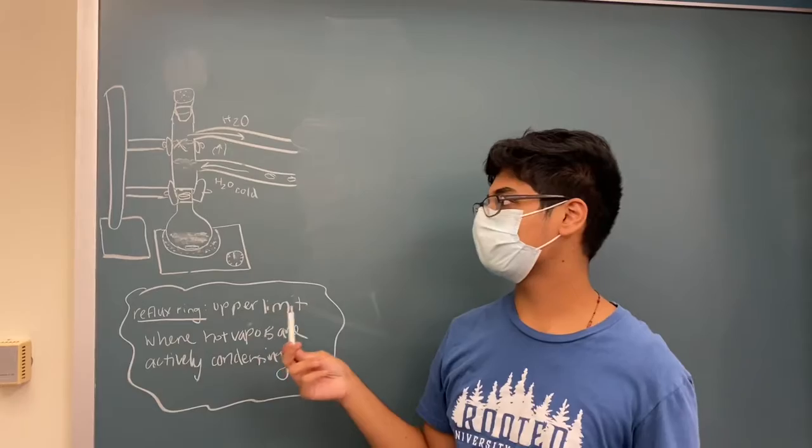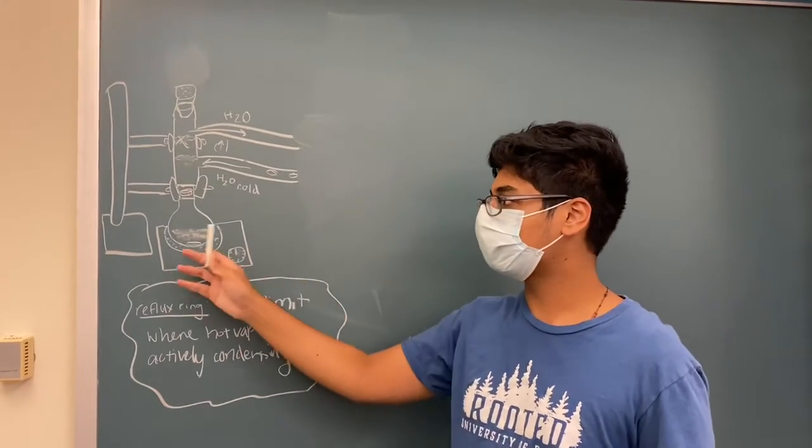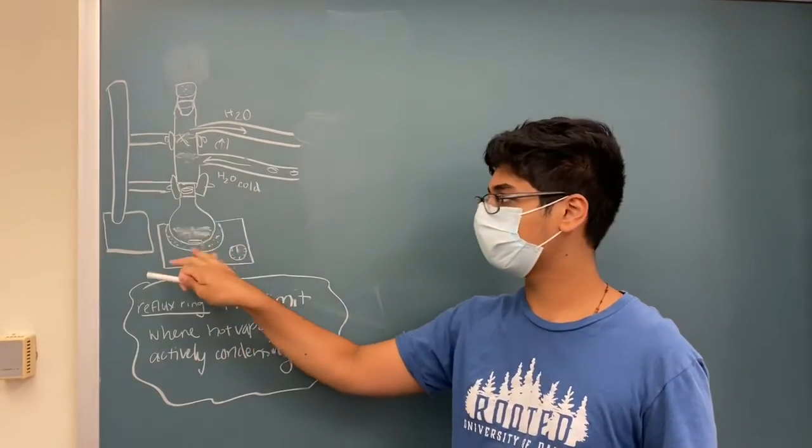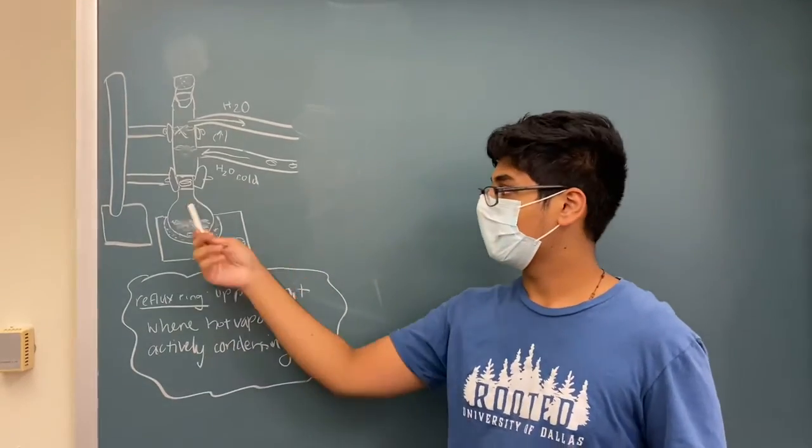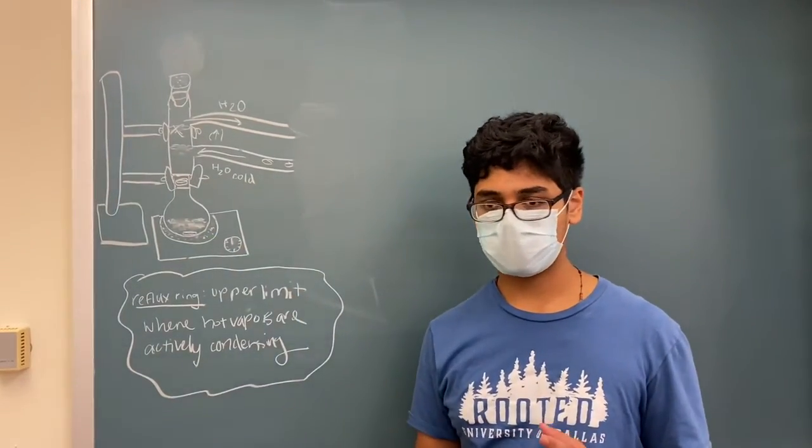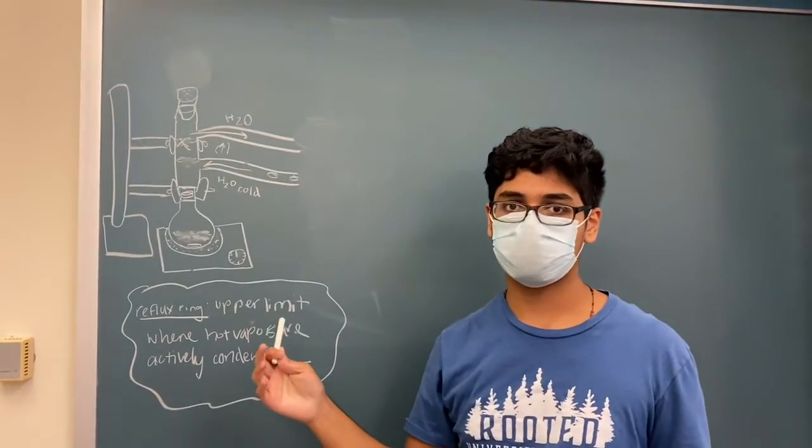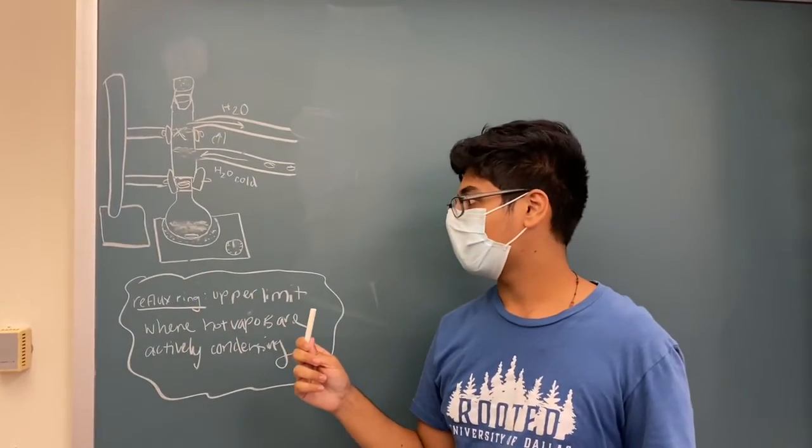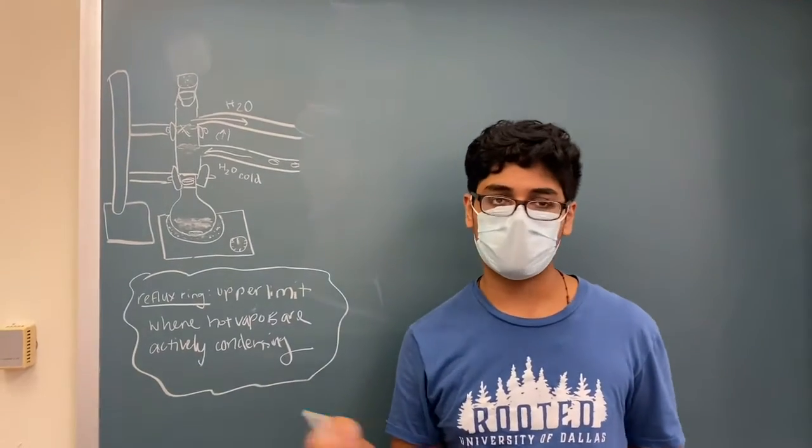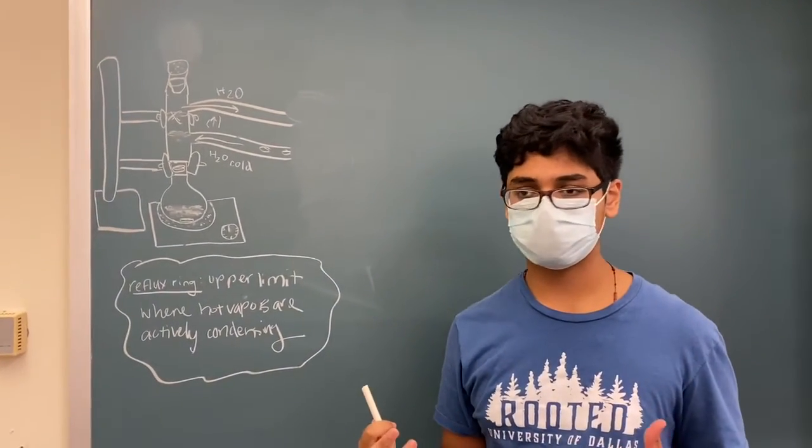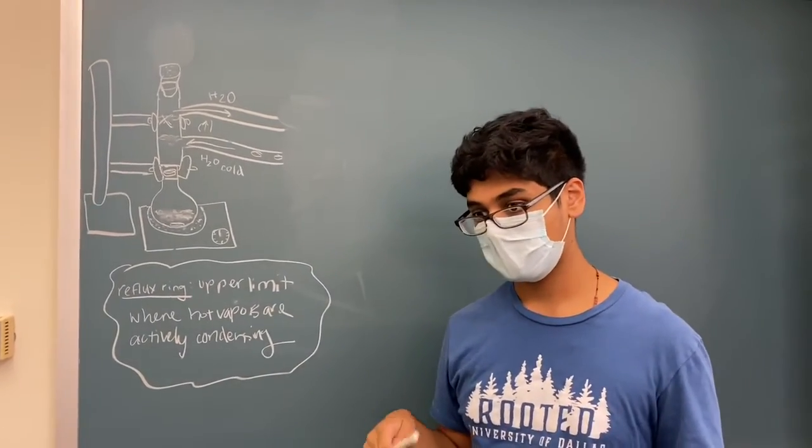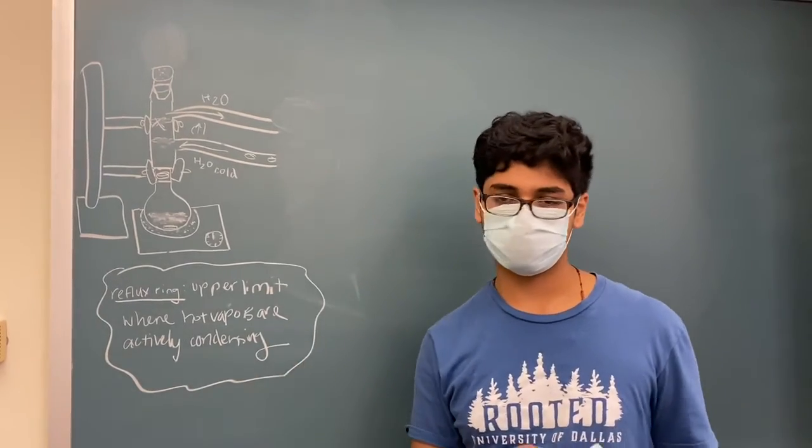Once it reaches that mark turn off the heat and try to raise the apparatus above the sand bath so that the round bottom flask can cool down and all the vapors traveling in and out can condense back into the solution. Afterwards, clean off all used materials and dispose of all materials in their proper designated locations.